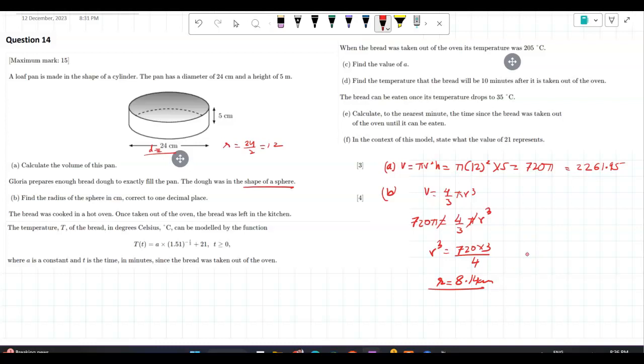The bread was cooked in a hot oven. Once taken out of the oven, the bread is left out in the kitchen. Now the temperature is given by this model, where a is constant, t is the time in minutes. This is important, t is time in minutes since the bread was taken out of the oven. When the bread was taken out of the oven, it was 205. Find the initial temperature.